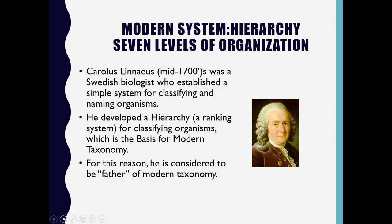Then came the modern system of classification — a hierarchy of seven levels of organization. This hierarchy is a ranking system of different levels of organization, which is the basis of modern taxonomy. Linnaeus developed this hierarchy for classifying organisms. Because his system of classification is the basis of modern taxonomy, he is considered as the father of modern taxonomy.